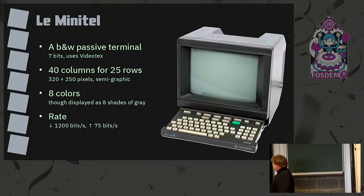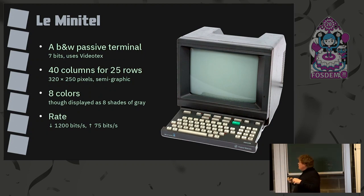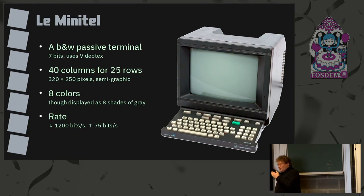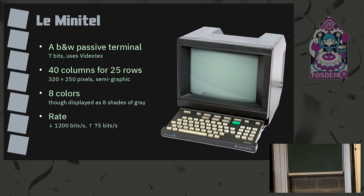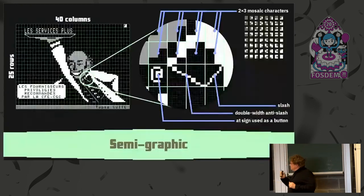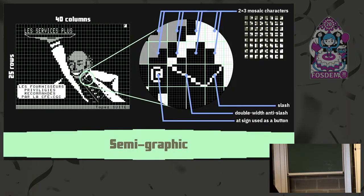The Minitel 2 is a little cube — a black-and-white passive terminal which communicates in 7-bit videotext. Screens are composed of 40 columns by 25 rows, giving 320 by 250 pixels. It could display 8 colors, though nearly all Minitels were black and white. It downloads at 1,200 bits per second and uploads at 75 bits per second, because 75 bps is only for the keyboard — giving approximately 7 characters per second. Typing on this keyboard was quite good.